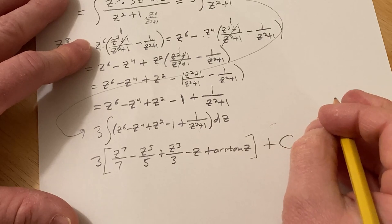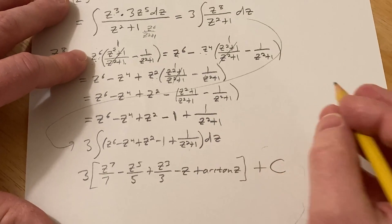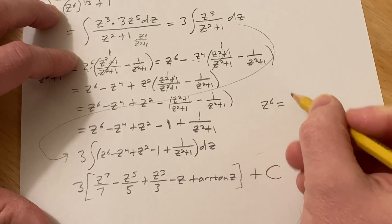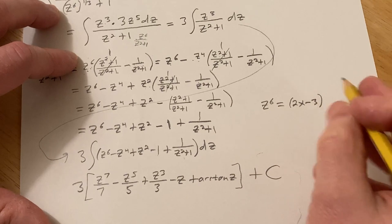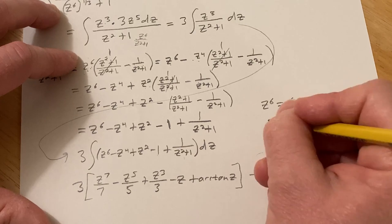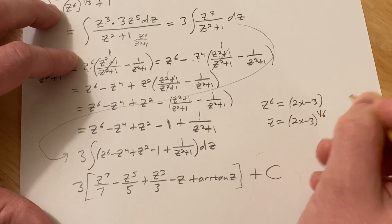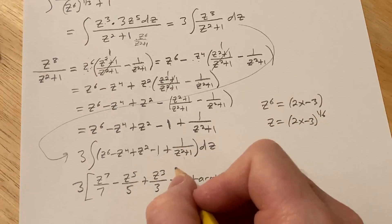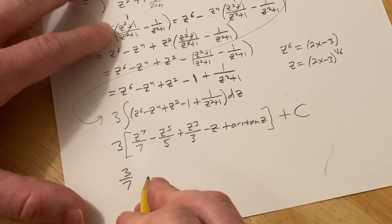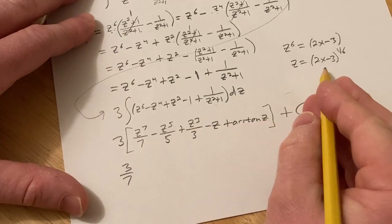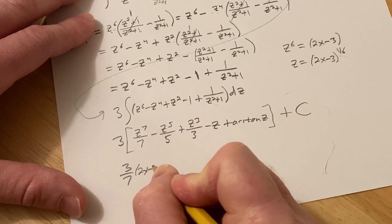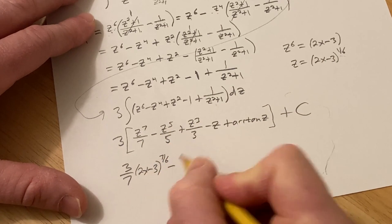Now we need to go back and substitute everything back in. We know that z^6 is equal to 2x-3. This means that z is going to be (2x-3)^(1/6). Now you can just go back in here and substitute everything in quite nicely. This will be 3/7 times (2x-3)^(1/6) raised to the 7th power. So this will be (2x-3)^(7/6). And I have not done this problem until now. This is my first time actually doing the full problem.